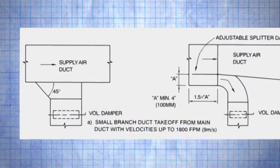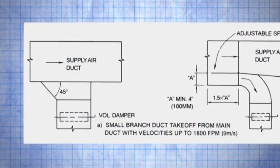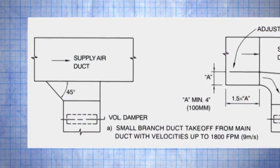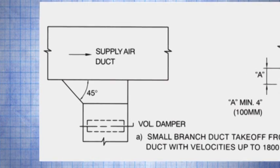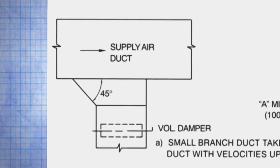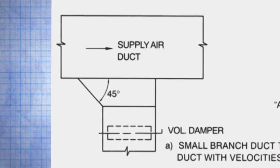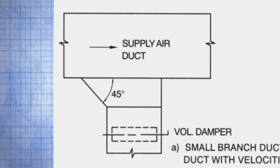One additional design point to consider is that if the damper is close to the main duct, the axis of the damper blade should be parallel to airflow. Otherwise, the scoop effect may cause a very small movement of the damper blade to impose a large difference on airflow changes, which makes air balancing problematic and less precise.